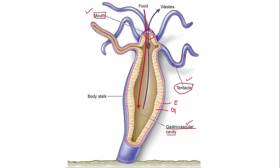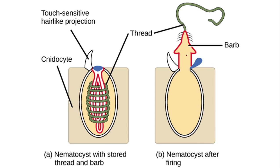Now let's discuss how ingestion, digestion, and ejection take place in hydra. The prey — which could be daphnia, cyclops, or similar organisms — comes into contact with the hydra. It is first grabbed by the tentacles, and the stinging cells present on the surface of the tentacles help in paralyzing the prey. These cells are called nematocysts.